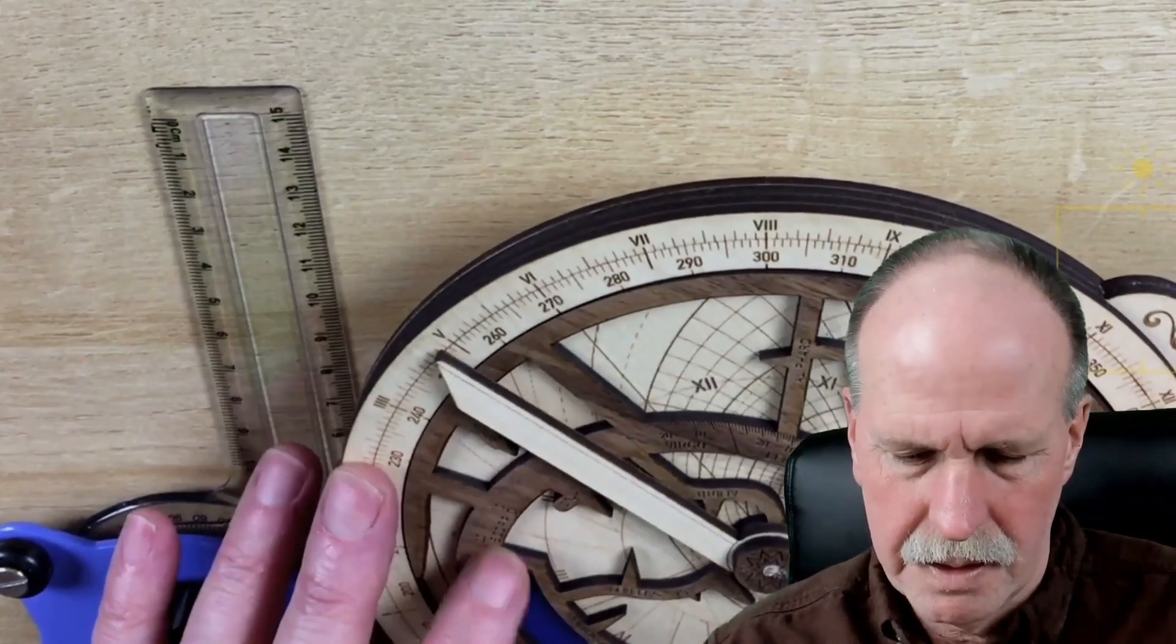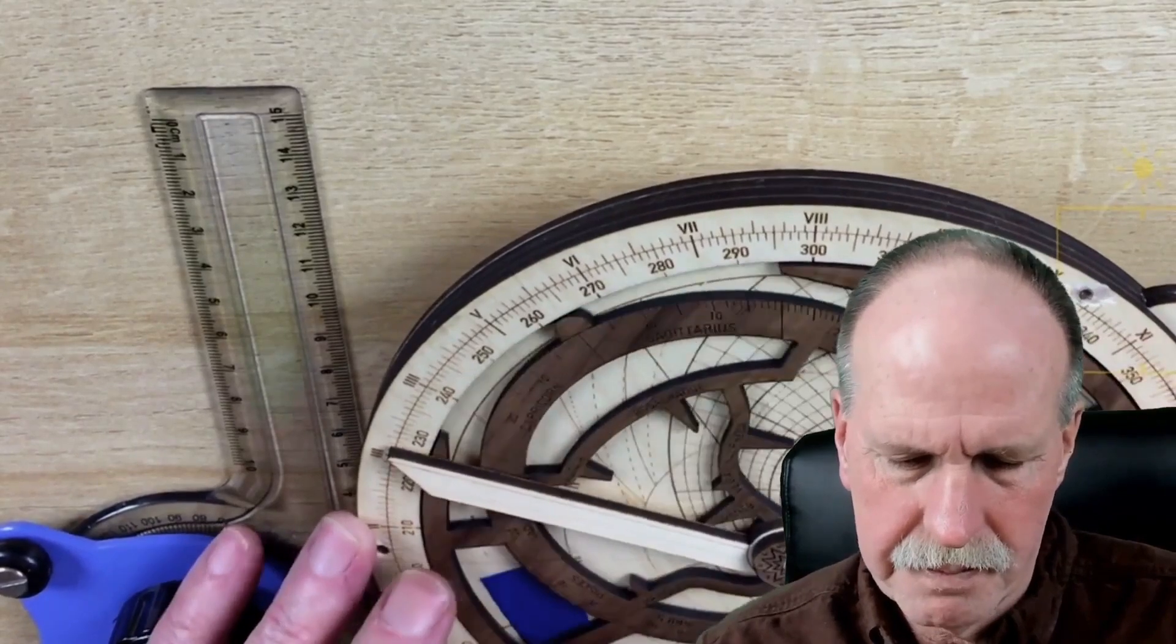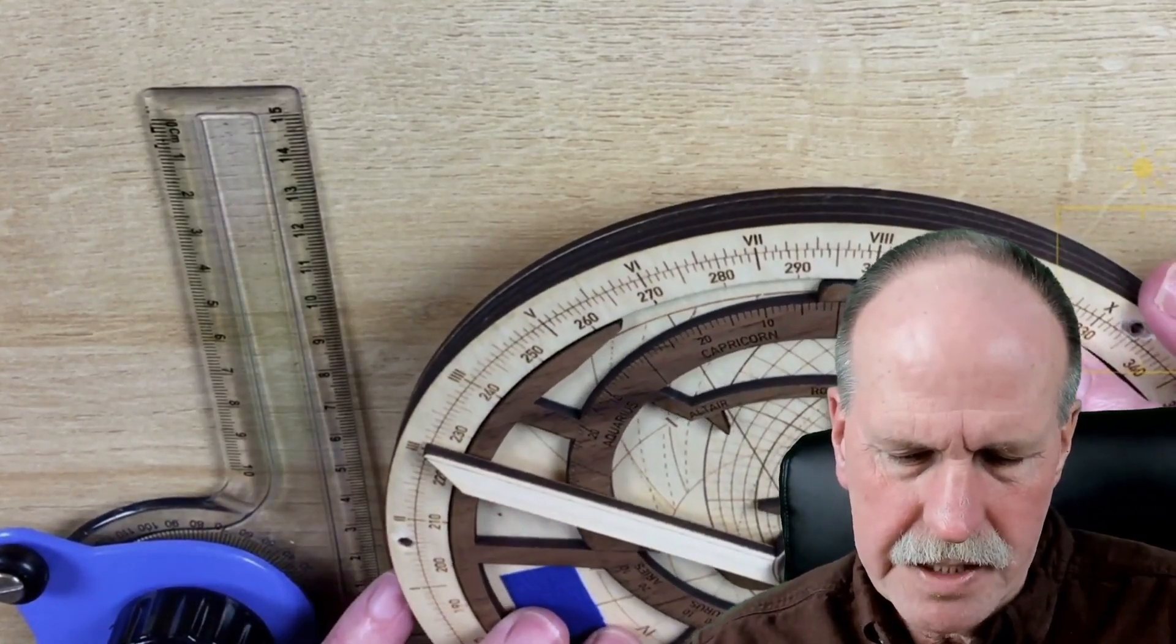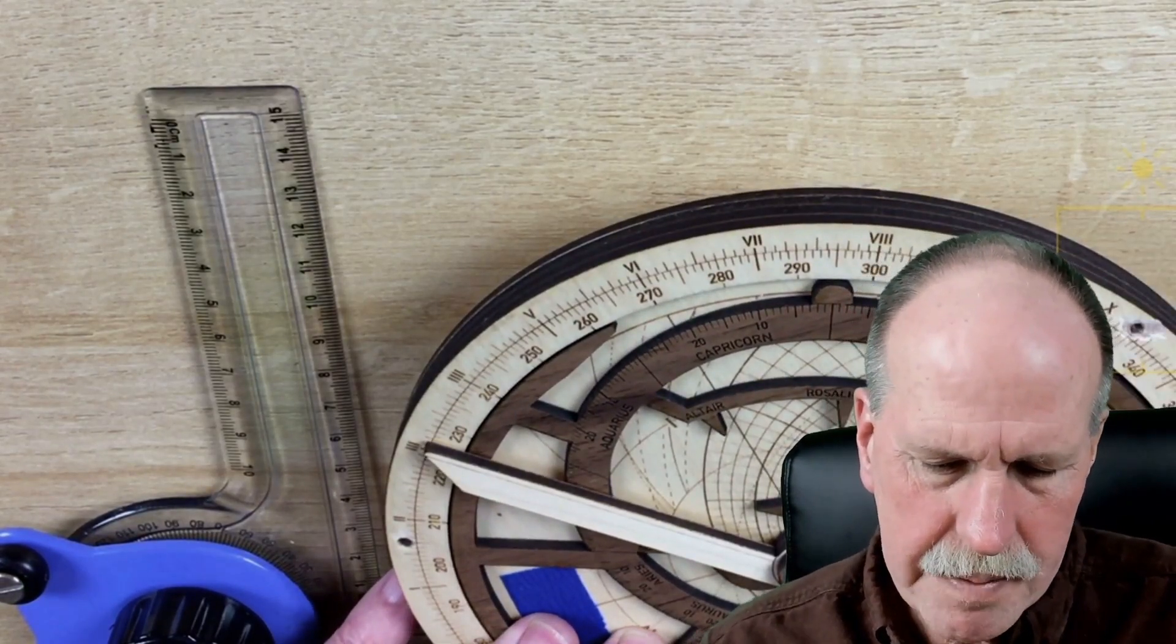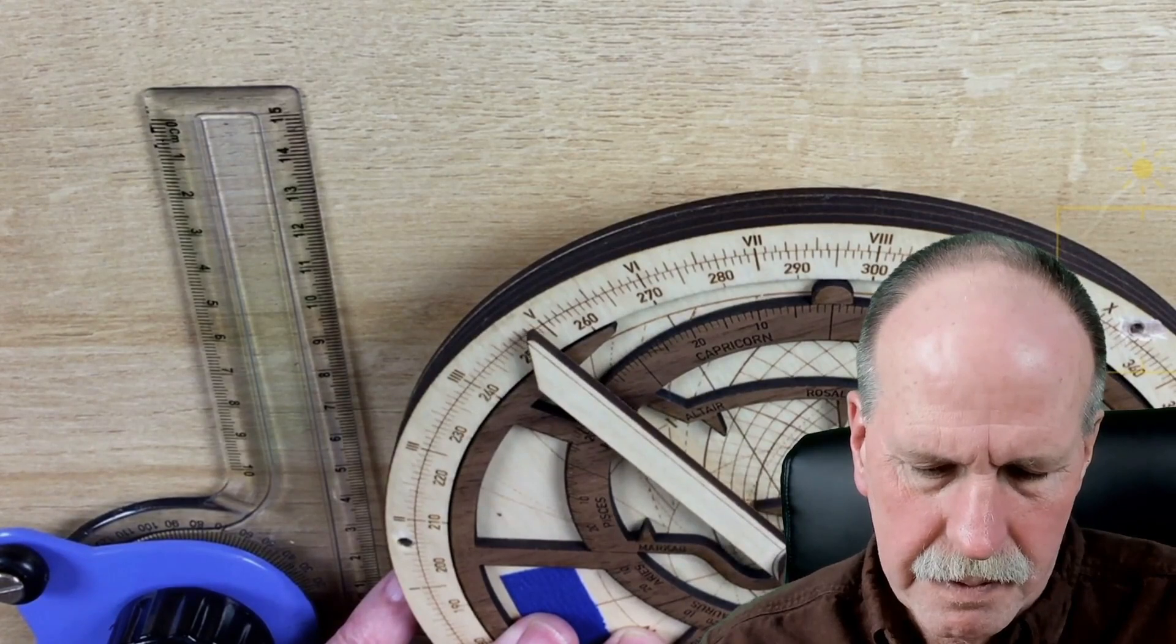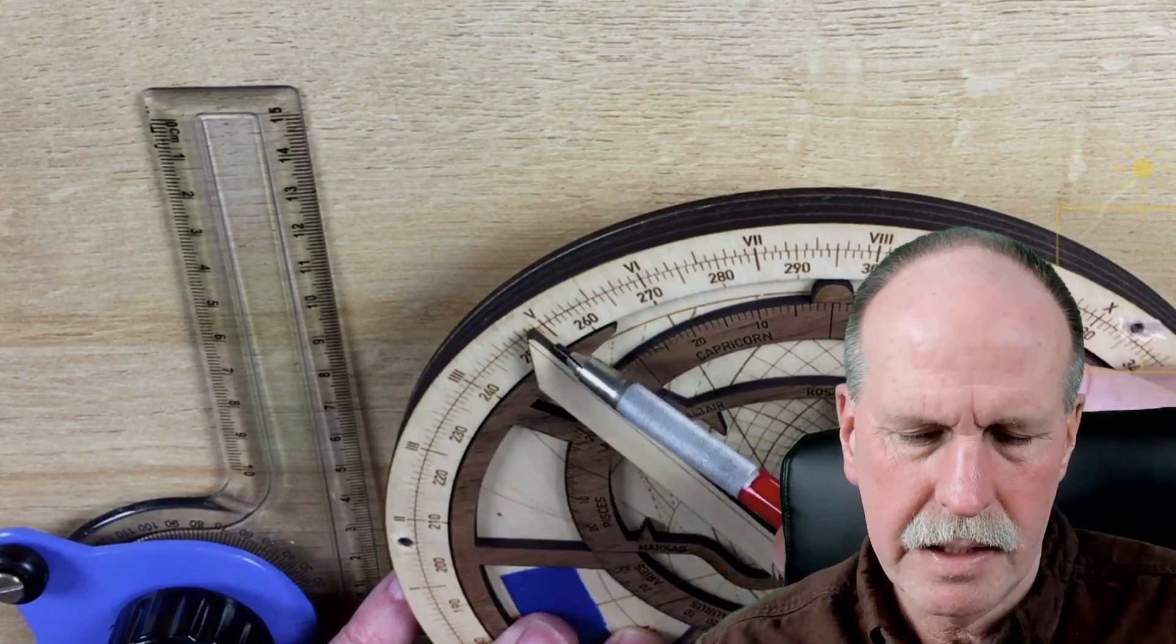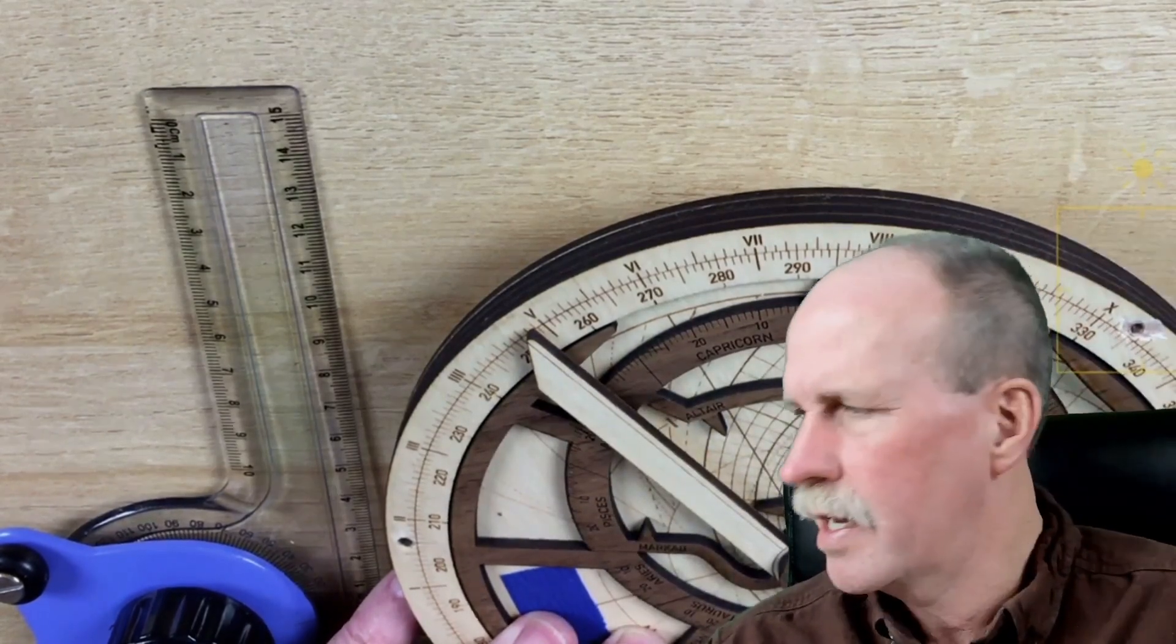We're going to go to Aquarius, and it's going to be the seventh day of Aquarius, and we're going to find the time of astronomical twilight. We line it up with the 18 degree dotted line and we get just before 5 a.m., so it's going to be about 5:50 a.m.